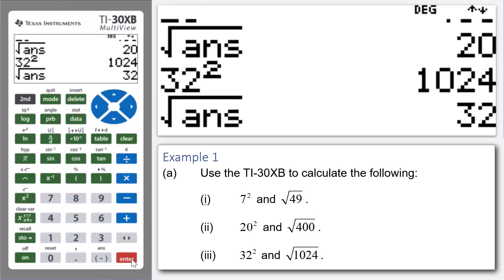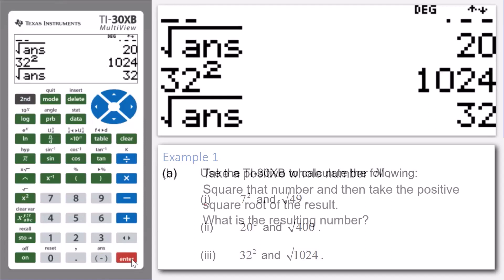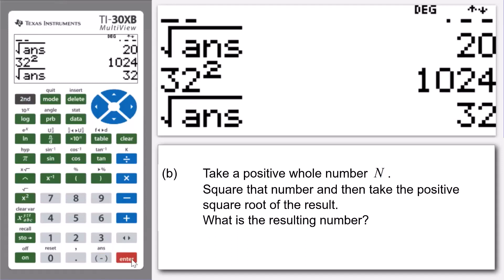So, what's going on? Well, if we have a look at part B, it asks us to basically take a positive whole number N.